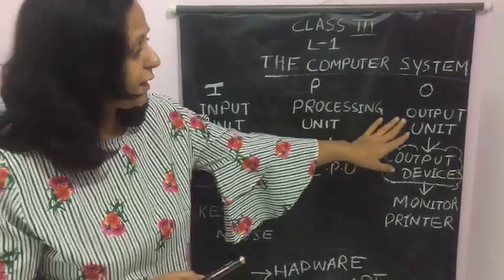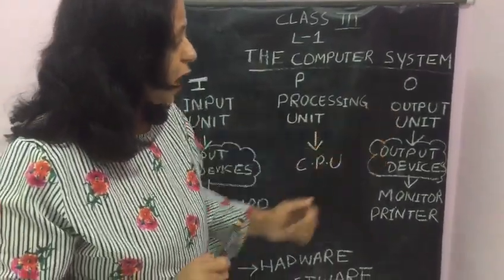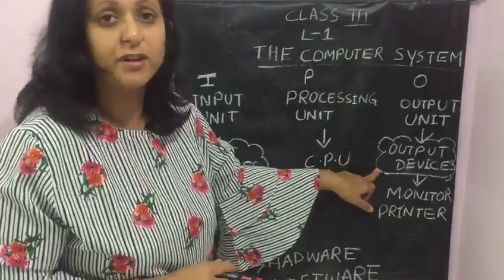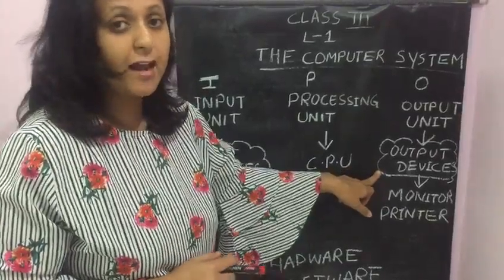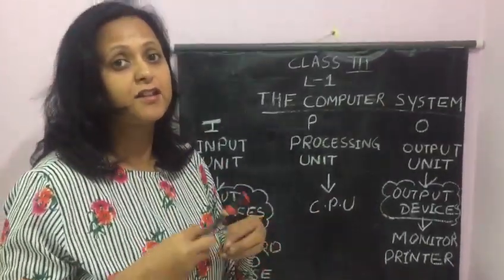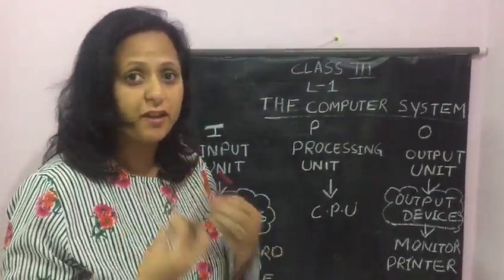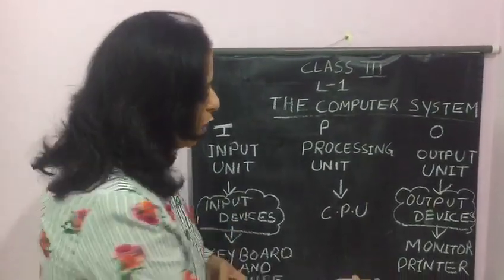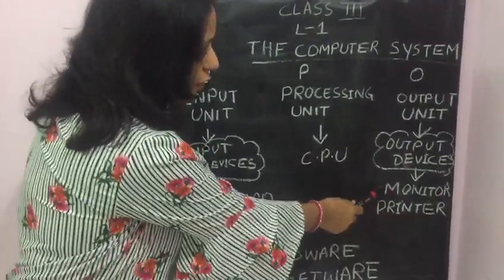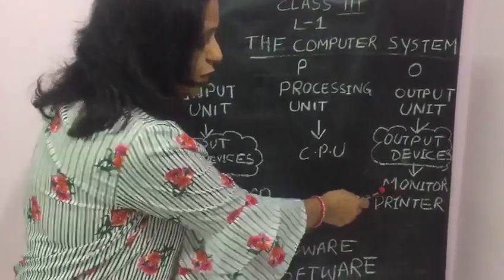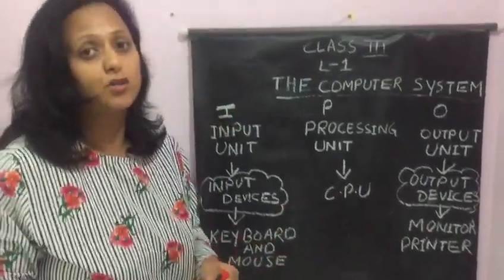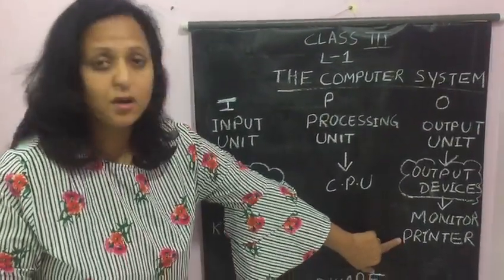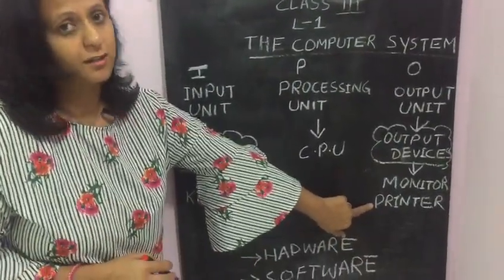The next one is the output unit. The output unit consists of output devices. Whatever data and instructions you have entered through keyboard and mouse, you can see the results on the monitor. So the monitor is an output device, and the printer is also an output device.